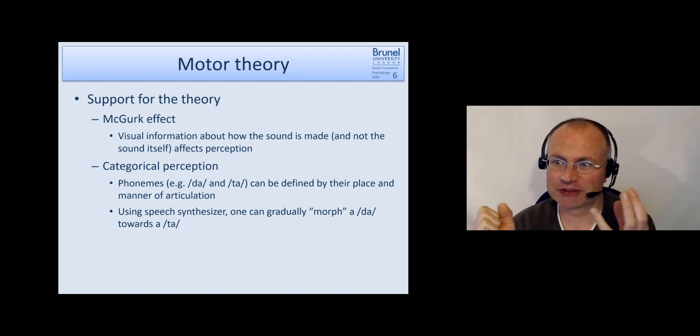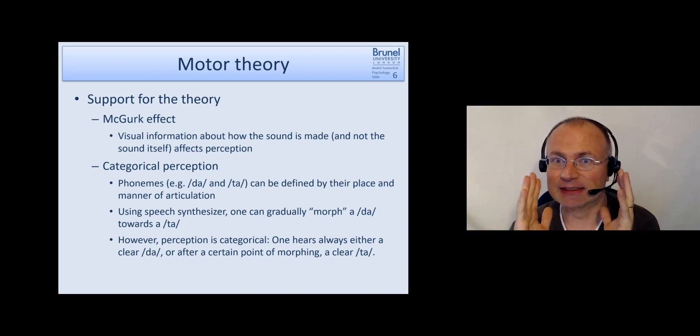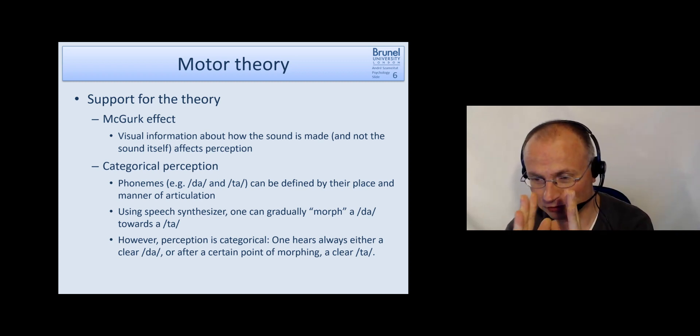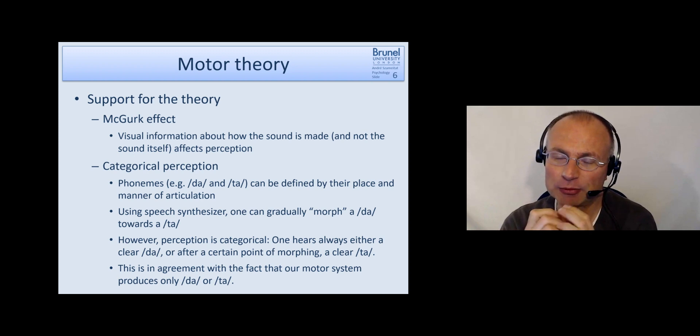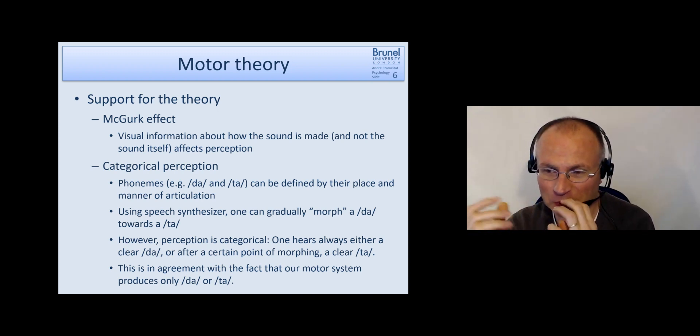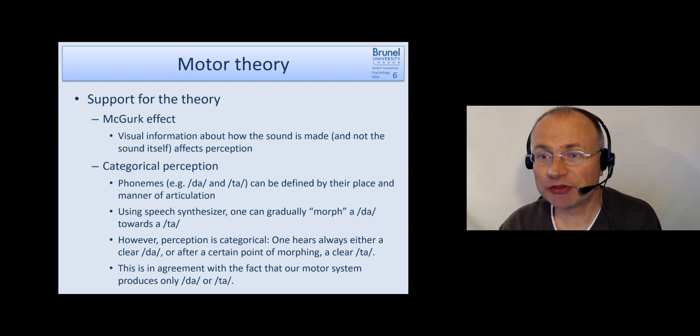And now what we can do is we can use a computer software or speech synthesizer and we can gradually morph the acoustics from a da towards a ta. So that we have in between stages acoustically. However what happens now is that the perception is categorical. That means that we always hear either a clear da or after a certain point of morphing we hear a clear ta. Or in the between stage we may hear sometimes for the same acoustic a da or a ta. But we never perceive something in between, some mixture sound or something like that. And the interpretation of that is that we can only produce da or ta.